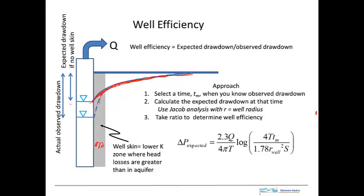The expected drawdown is based on our theoretical analysis using the properties of the aquifer out away from the well. But in fact, we observe that the drawdown at the well is greater, and that results from the extra head loss due to the well skin.